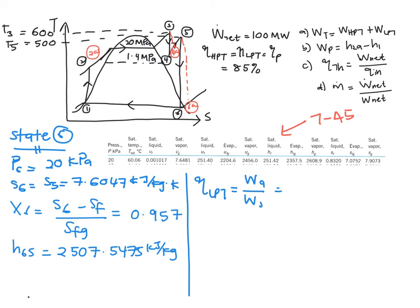So it is equal to H5 minus H6a over H5 minus H6s, and this equals 0.85.